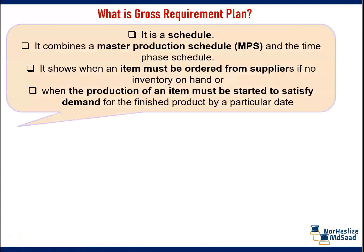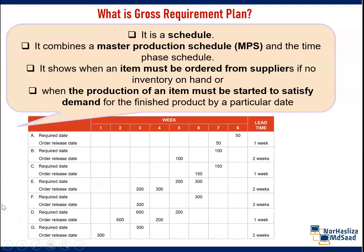It is a schedule. It combines a master production schedule and the time-based schedule. It shows when an item must be ordered from suppliers if no inventory on hand, or when the production of an item must be started to satisfy demand for the finished product by a particular date.